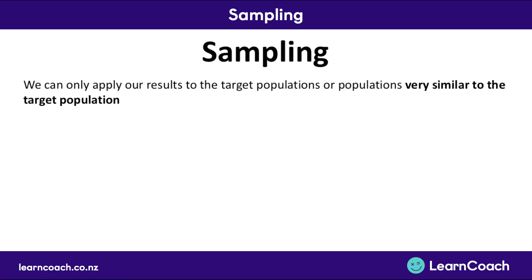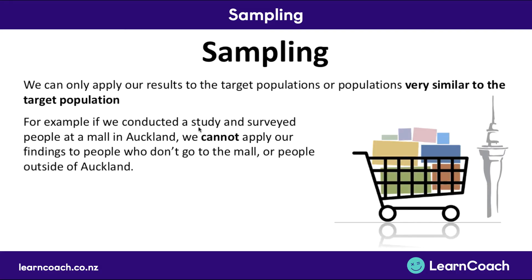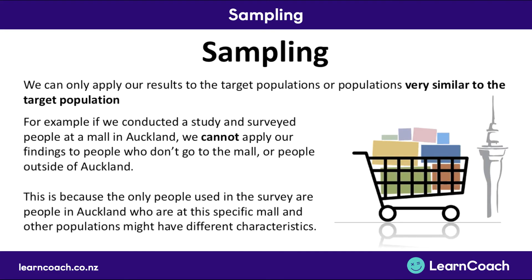It's very important to remember that you can only apply your results from the study to the target population or populations very similar to the target population. This comes up a lot in exams. For example, if we conducted a study and surveyed people at a mall in Auckland, you can't apply your findings to people who don't go to the mall or people outside of Auckland, because other populations might have different characteristics.